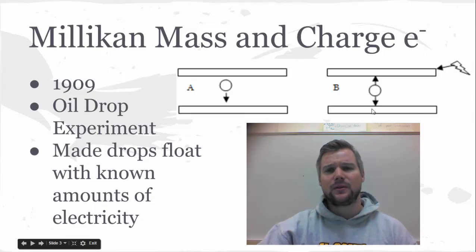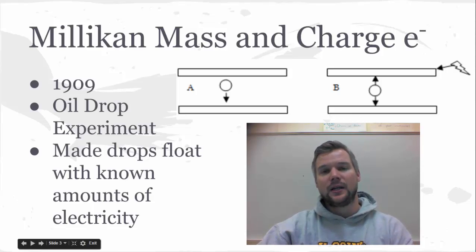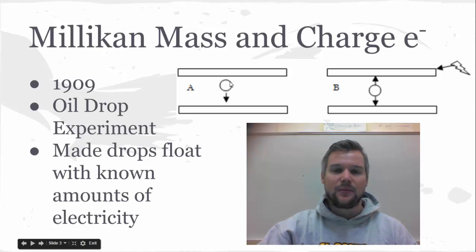Then Millikan was able to work off of Thomson and figure out the actual mass and charge of that electron. He did this in 1909, so again, a bit after when Thomson did his work. His experiment was called the oil drop experiment, and what he did is he put these little tiny drops of oil that he ionized, and they were going to fall by gravity.